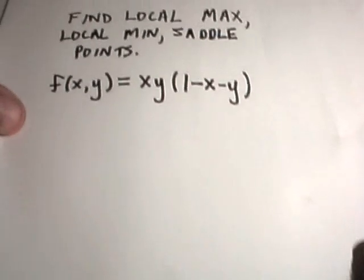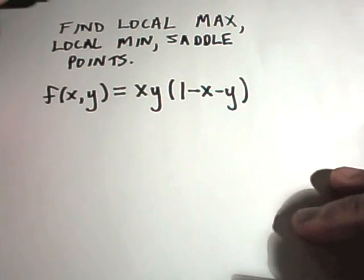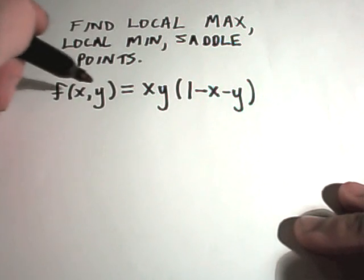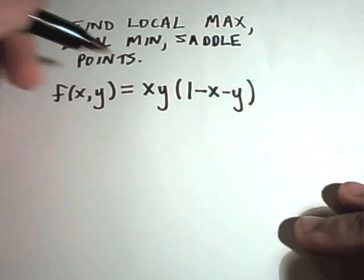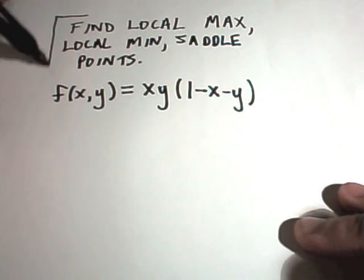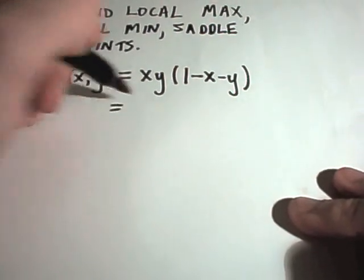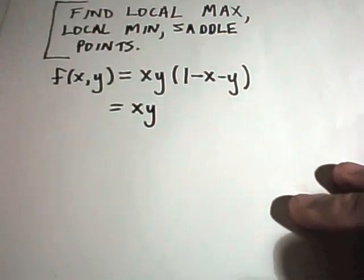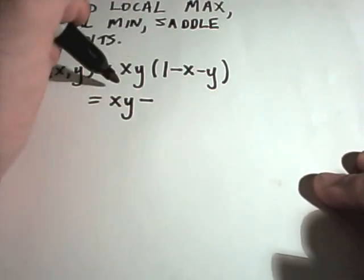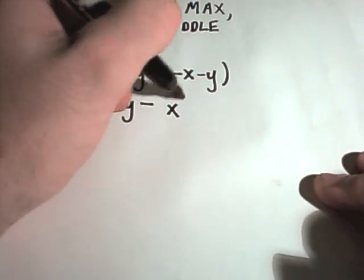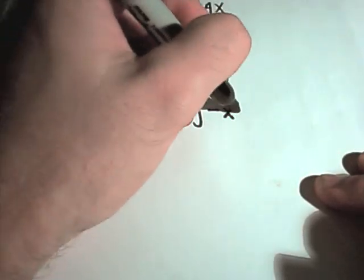Let's do the first example. For this function, f of xy equals xy times the quantity 1 minus x minus y, we're going to find any local maximums, local minimums, and saddle points. The first thing I would do is multiply this out — I don't want to take derivatives using the product rule. So I'll get xy minus x squared times y, and then minus xy squared.